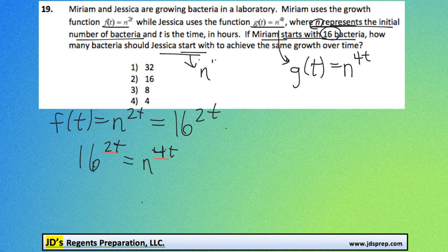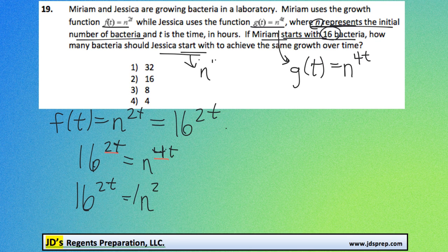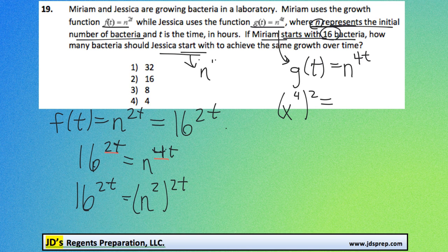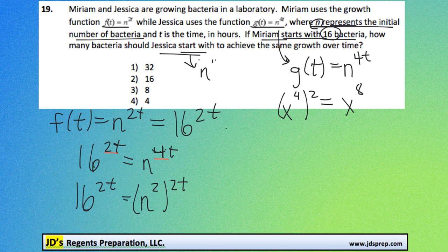How do we make 2t and 4t equal to each other? Just like this. I'm going to write n squared to the power of 2t. And we're able to do that because we have the exponent law of power of a power. For example, if you had x^4 squared, you multiply those exponents together. So a similar situation is happening here. 2 times 2t is 4t.